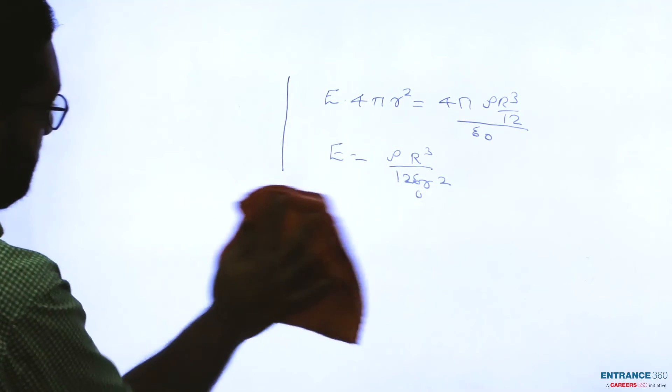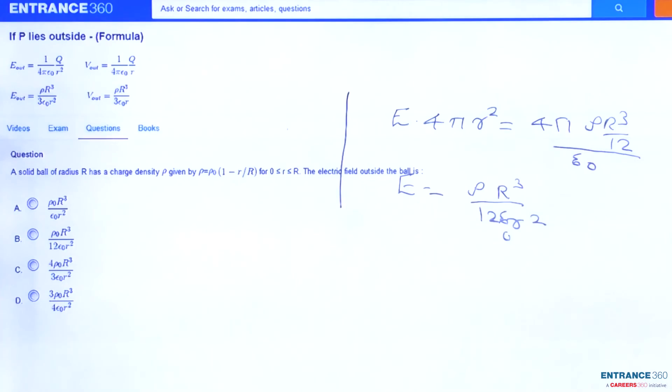Now let's check the options. So rho_0 R cubed by 12 epsilon_0 r squared is option B. B is the right answer.